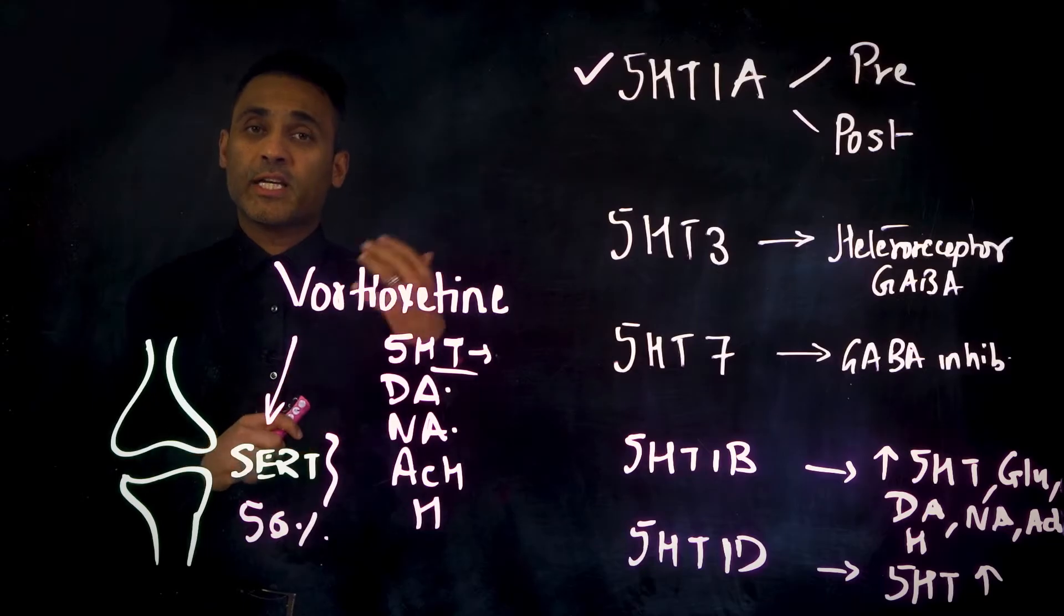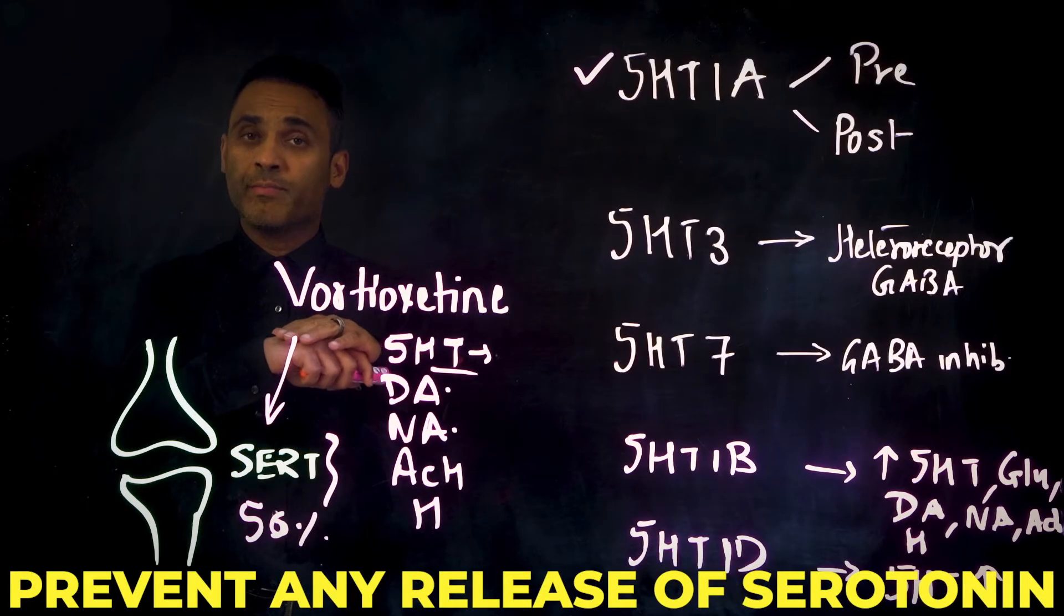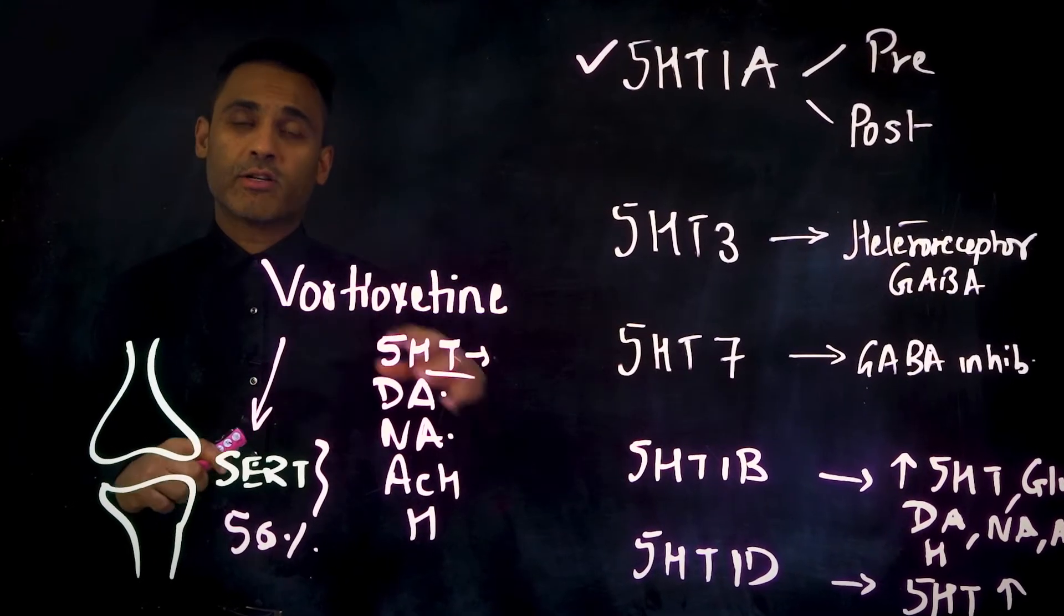When it activates that receptor initially, it will stamp on the brake, prevent any release of serotonin. However, that particular receptor will desensitize and serotonin will flow.